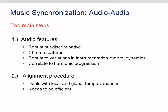To compute the linking structures, one basically proceeds in two steps. First, one converts the waveform-based music recordings into suitable feature representations. These features need to be robust to aspects that are irrelevant for the task at hand, while still being discriminative enough for solving it. In the synchronization context, so-called chroma features have turned out to be a suitable mid-level feature representation — robust to variations in instrumentation, timbre or dynamics, while capturing characteristic information that correlates to the harmonic progression. On the basis of such chroma features, one can then compute the linking structure by applying alignment techniques, as also used in text or speech processing, to deal with local and global tempo variations.